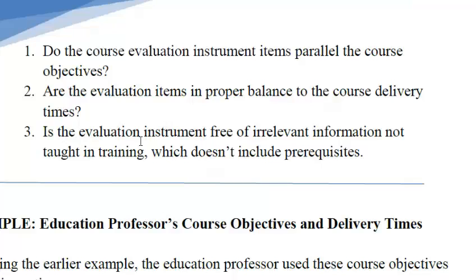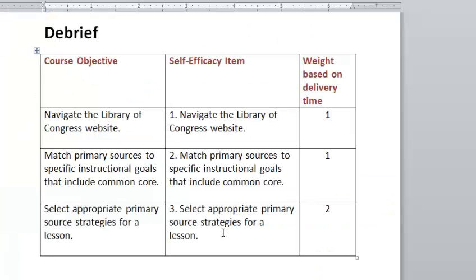The last criteria is whether the evaluation instrument is free of irrelevant information. As we lined it up, we don't have any additional information — we're not asking about anything that wasn't part of the course objectives, so we meet that criteria. In essence, the way the instrument was created would be content valid as long as we weighted that third item double in terms of points in comparison to the other two.